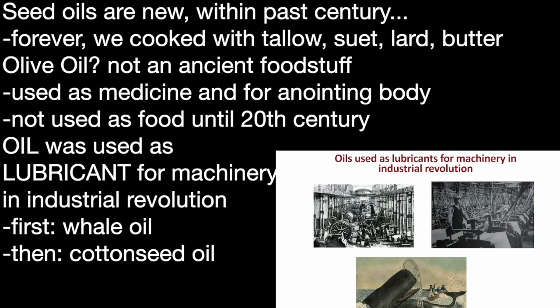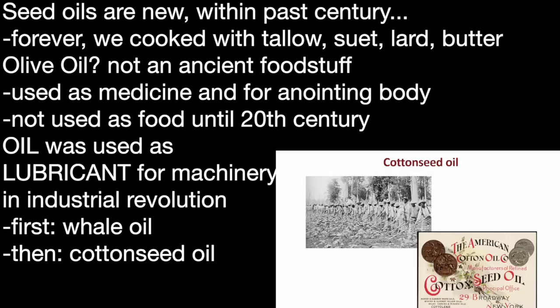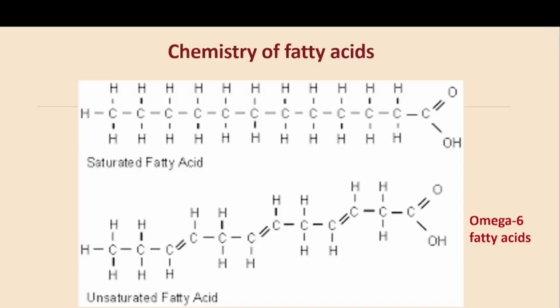What oils used to be used for was as a lubricant for machinery in the Industrial Revolution. One of the main reasons we hunted whales was to get whale oil — it was used to lubricate the vast and growing amount of machinery fueling the Industrial Revolution. When we hunted out all the whales, the Americans in the South who were growing cotton discovered that cotton seeds, a by-product of their crop, could be crushed into cottonseed oil — a saturated solid fat like butter.